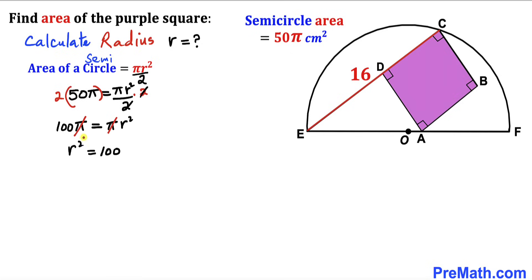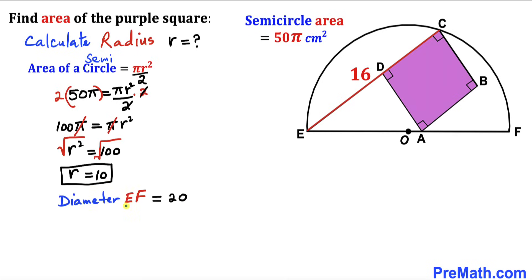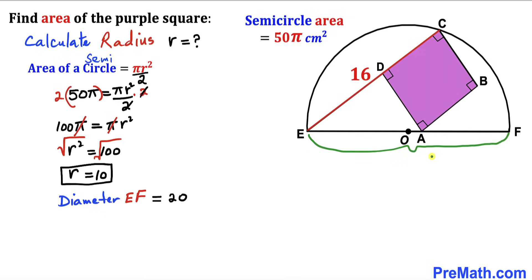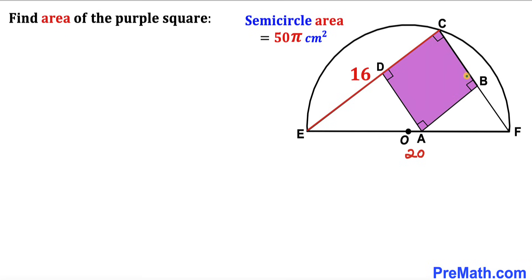Taking the square root of both sides, our radius r turns out to be positive 10 cm. Therefore, the diameter EF of this semi-circle is twice the radius: 10 × 2 = 20 cm. So diameter EF is 20 cm.